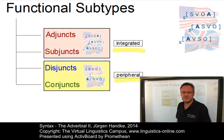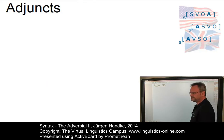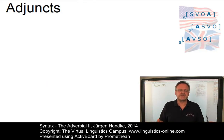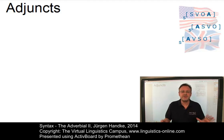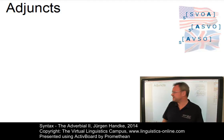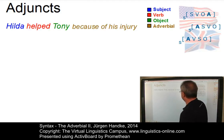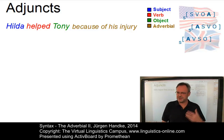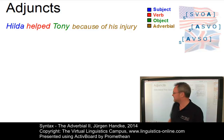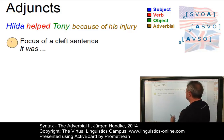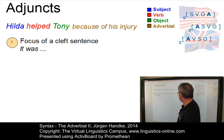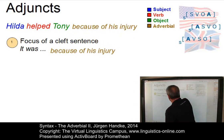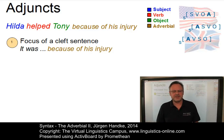Let us look at these four types in more detail and begin with adjuncts. Adjuncts closely resemble the other elements of clause structure such as subjects, complements, and objects. Using the sentence 'Hilda helped Tony because of his injury', where because of his injury is our adjunct, the first criterion says that adjuncts can be the focus of a cleft sentence just like subjects can be: 'It was Hilda who helped Tony because of his injury', but also 'It was because of his injury that Hilda helped Tony.'